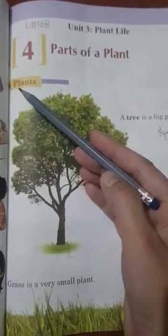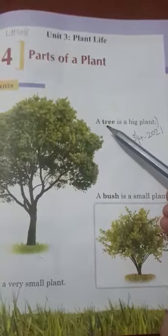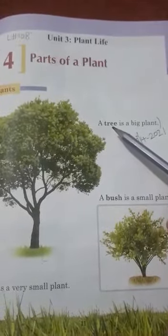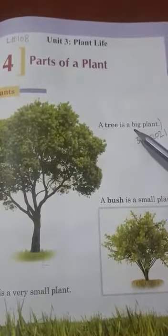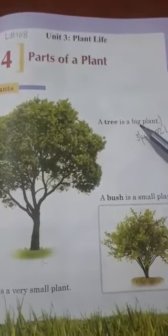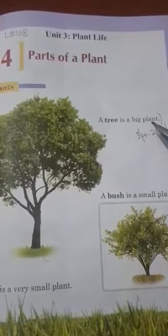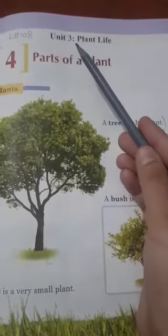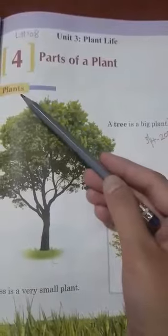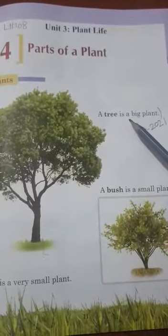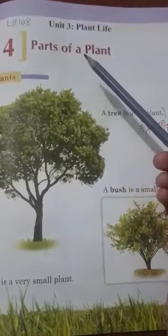Plants — P-L-A-N-T-S — plants. Tree — T-R-double-E — tree. Is — I-S — is. Big — B-I-G — big. Plant — P-L-A-N-T — plant. Unit 3 Plant Life, Chapter 4: Parts of a Plant. Plants — a tree is a big plant. KG class, now I will tell you in Urdu what parts of a plant are.